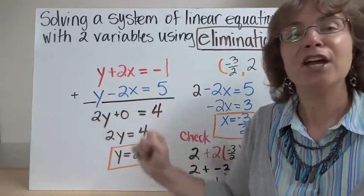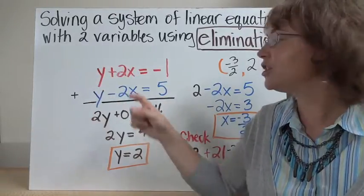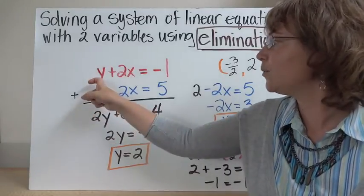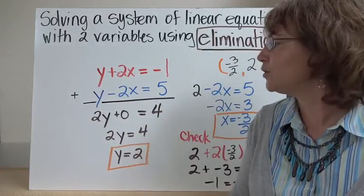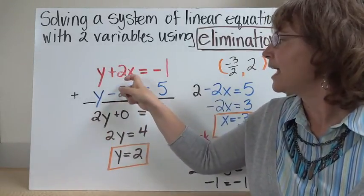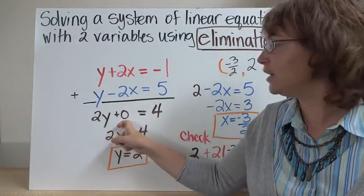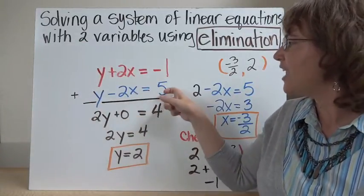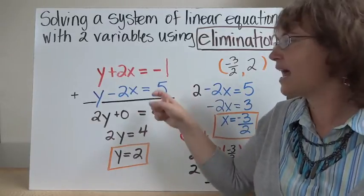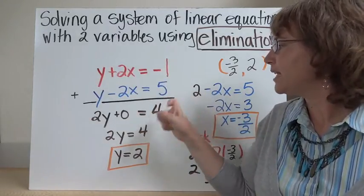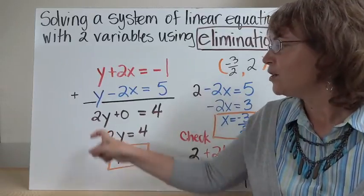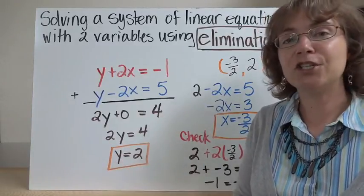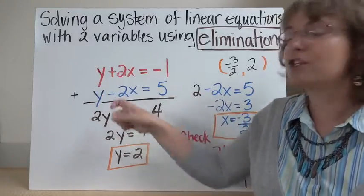So let's go ahead and add these equations. We have a y plus a y. We're trying to figure out the point at which these intersect, and at that point both the x and the y coordinate are exactly the same. So y plus y gives us 2y. We have 2y plus 2x plus a negative 2x, which gives me 0x's. Then negative 1 plus 5 gives me 4. So 2y equals 4. We divide both sides by 2, and we get y is equal to 2.